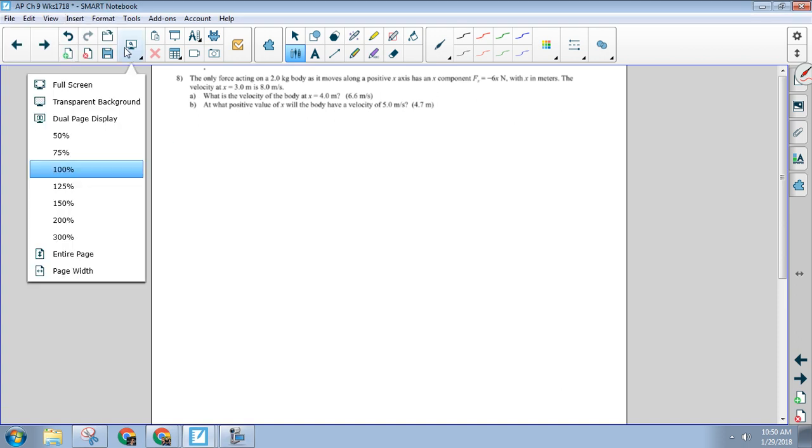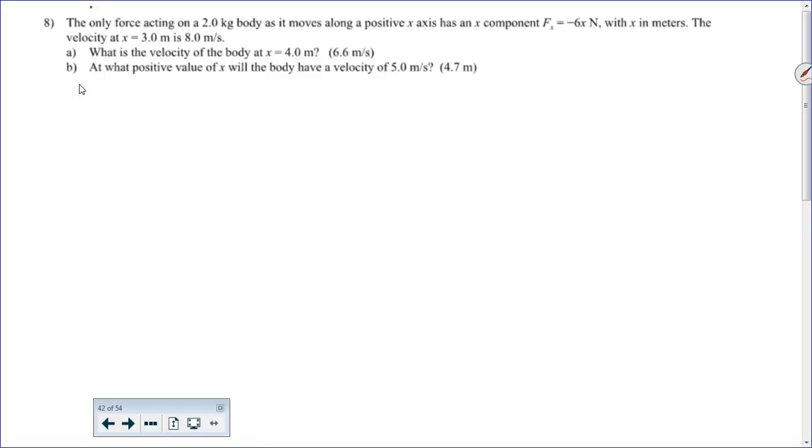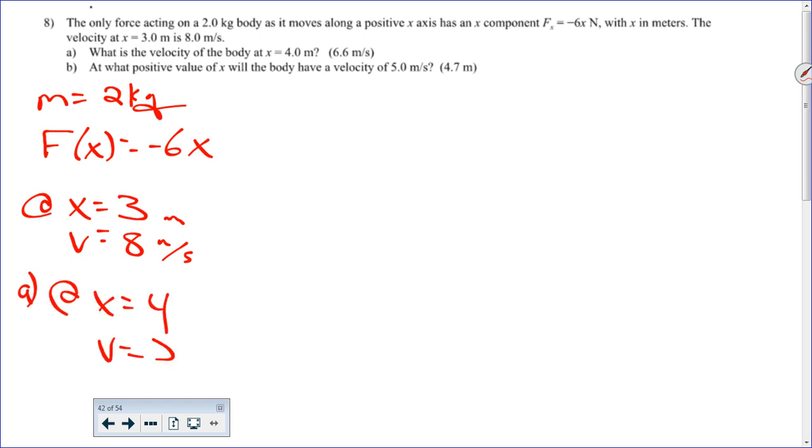All right, so we've got this thing that's moving on an x-axis. Here are the things we know. We know the mass is 2 kilograms. We know that the force acting on it as a function of x is negative 6x. The velocity when x equals 3 is 8. Question A wants to know, at x equals 4, what's the velocity? Everybody good with that?